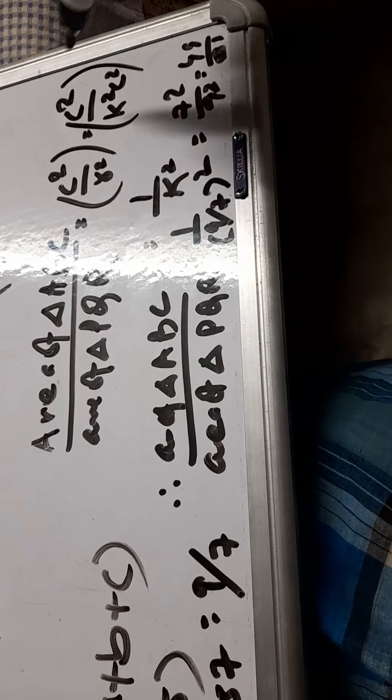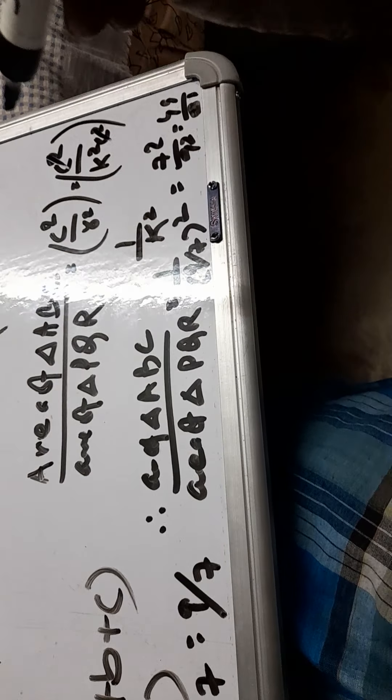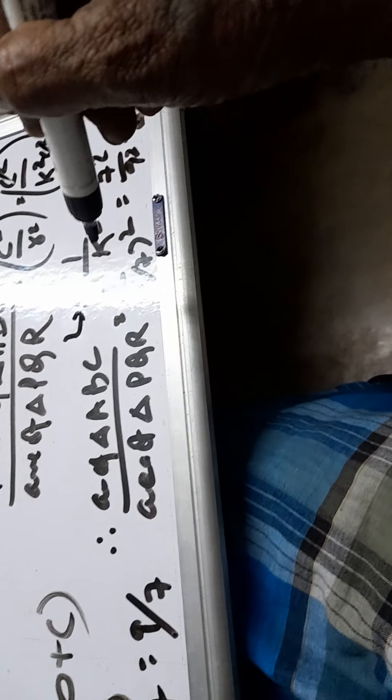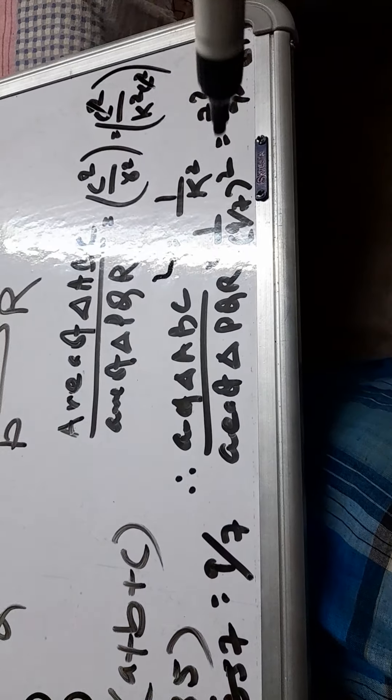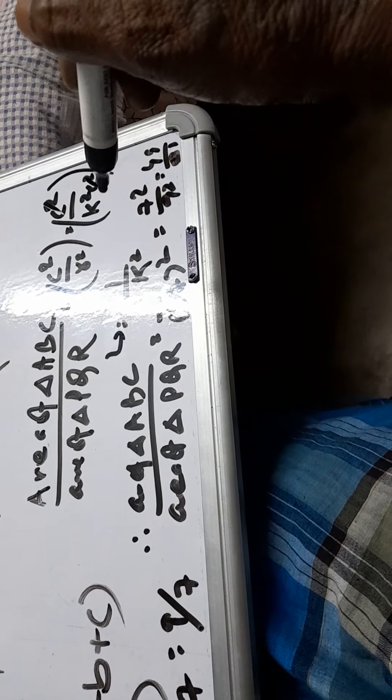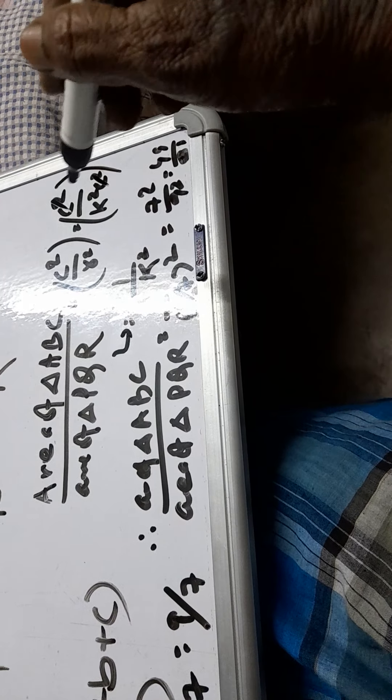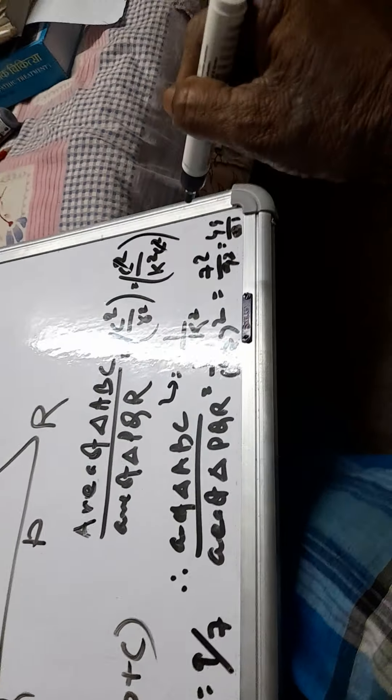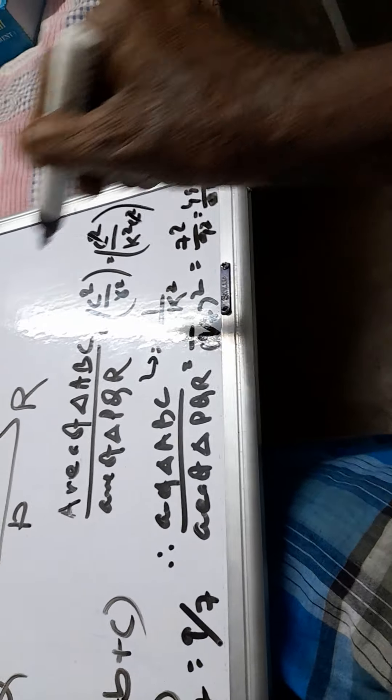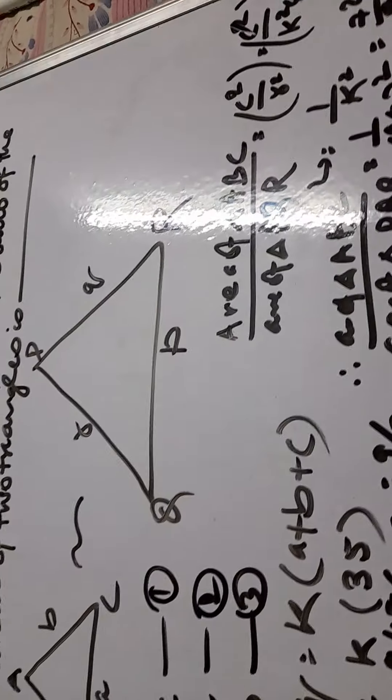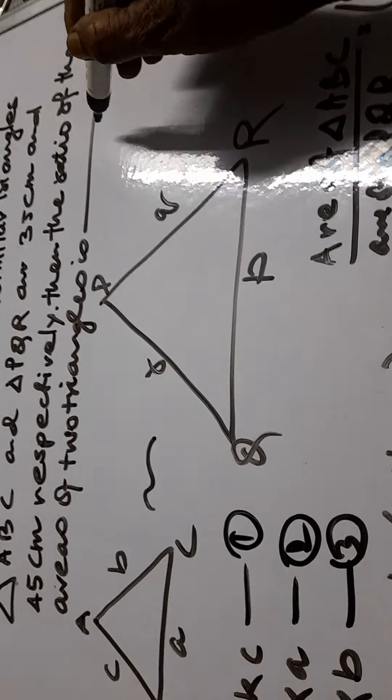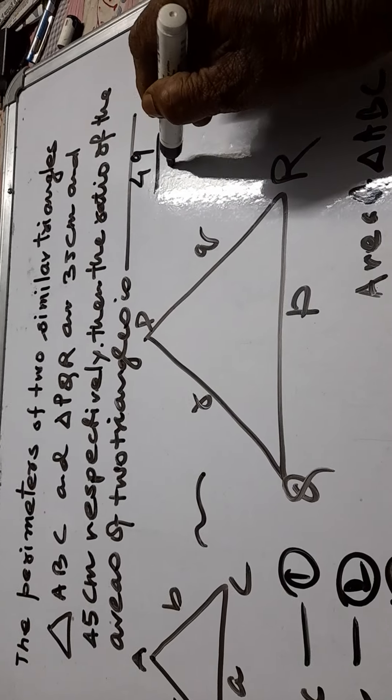So it will be 1 by K squared and we got the value of K is 9 by 7. So it will be 1 by 9 by 7 whole squared or it will be 7 squared by 9 squared, which is 49 by 81. So the ratio of the area of two triangles will be 49 divided by 81.